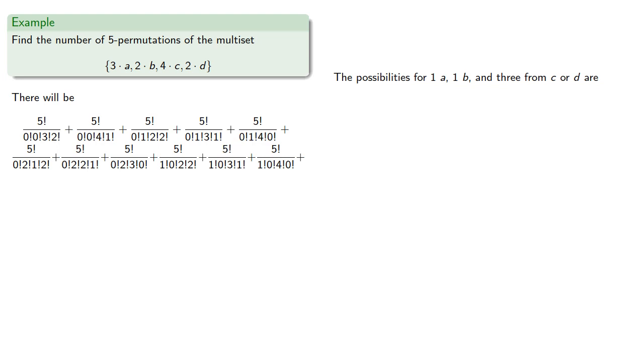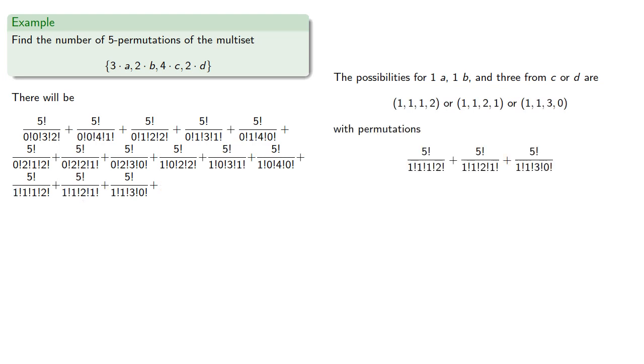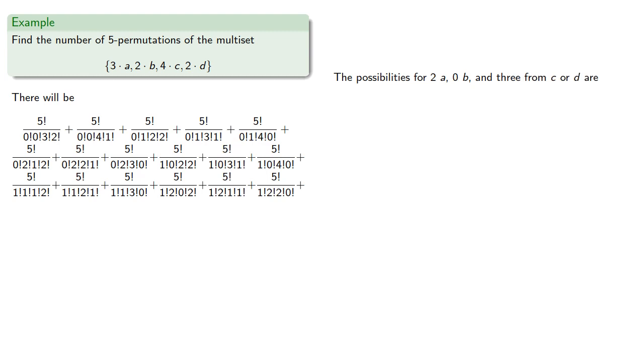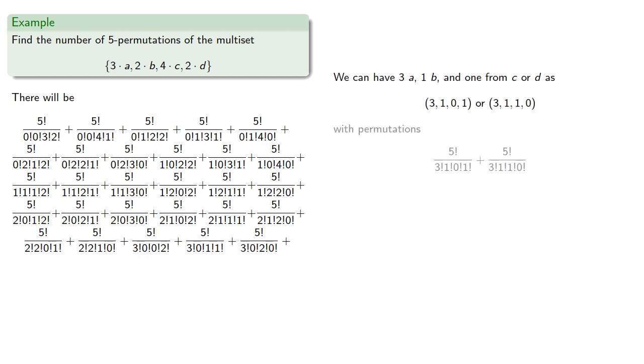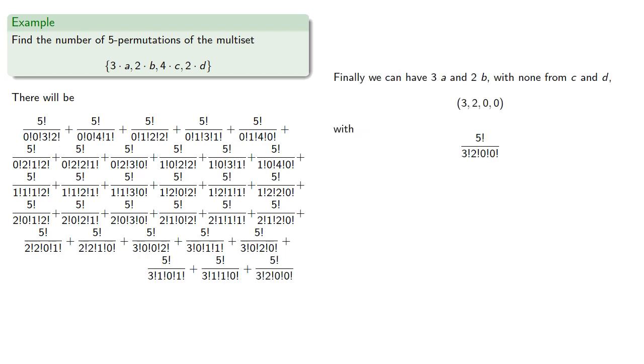The possibilities for 1 a, 1 b, and 3 from c or d are enumerated with permutations. The possibilities for 1 a, 2 b, and 2 more from c or d give additional permutations. 2 a, 0 b, and 3 from c or d. 2 a, 1 b, and 2 from c or d. 2 a, 2 b. We could have 3 a and 2 from c or d. 3 a, 1 b. And finally, we could have 3 a and 2 b with none from c or d. Phew! This rather horrifying expression is what we end up with when we try to use the formula.